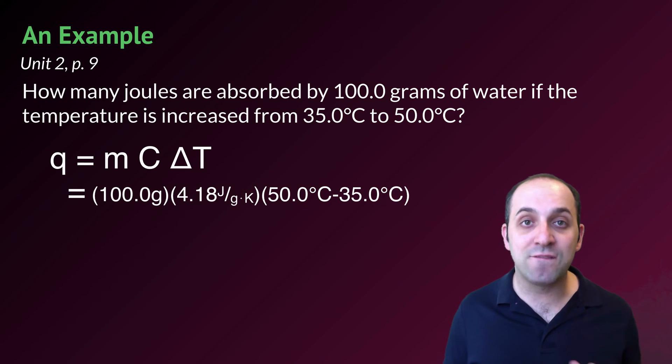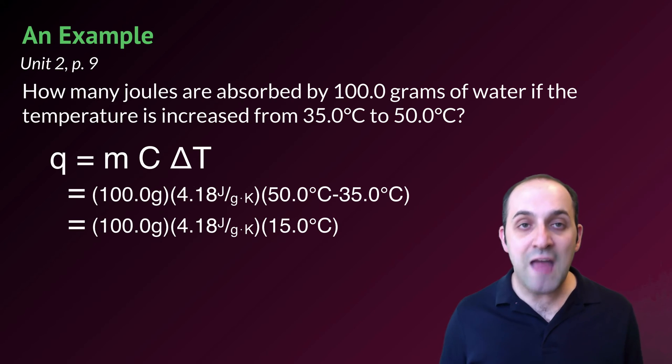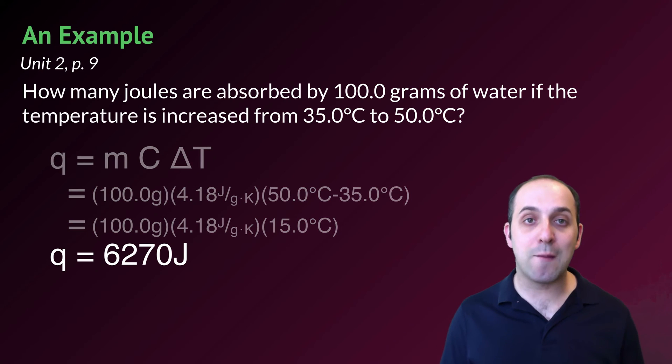And finally, delta T we can figure out by taking our final temperature and subtracting our initial temperature from it. So 50.0 degrees Celsius minus 35.0 degrees Celsius. That winds up looking like this, and when we do the math, our answer is going to wind up being 6,270 joules with three significant figures in our answer.